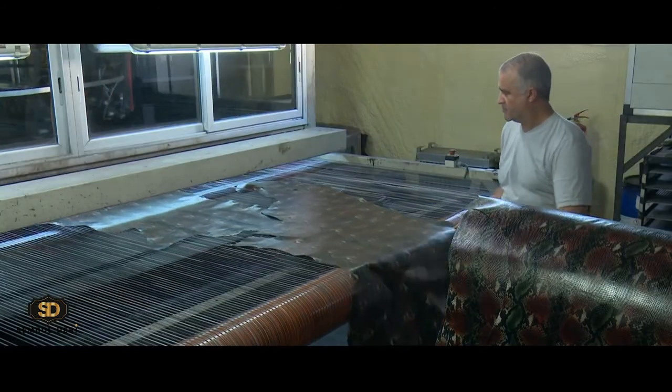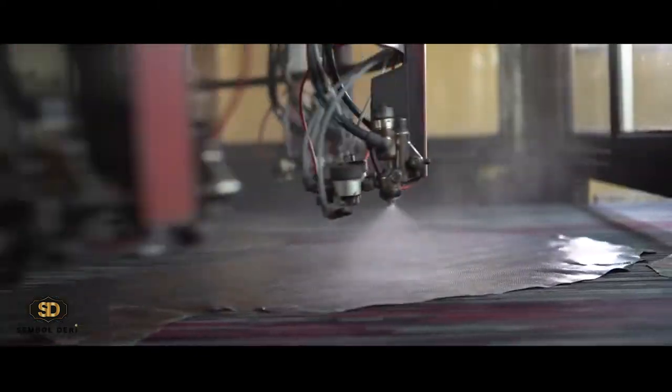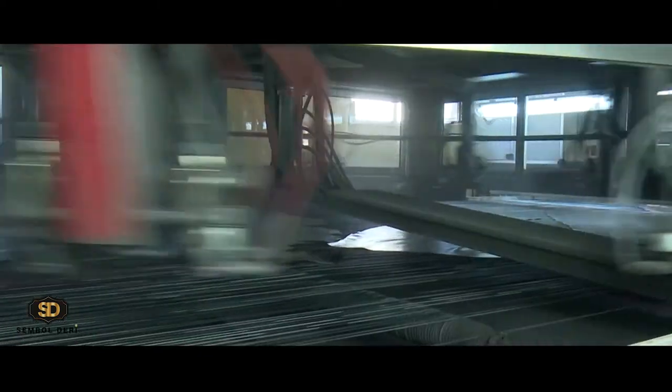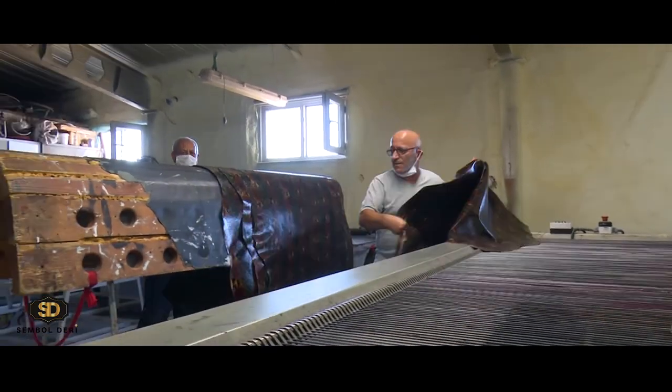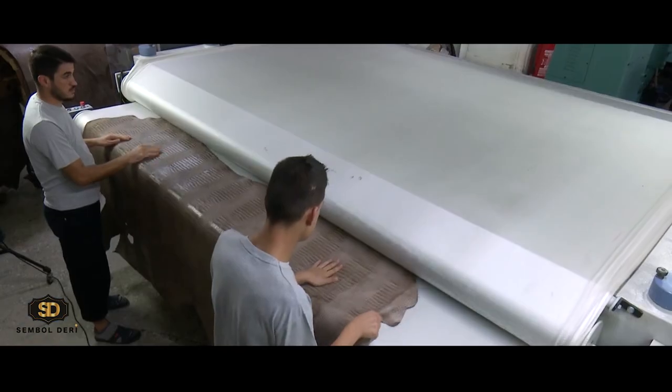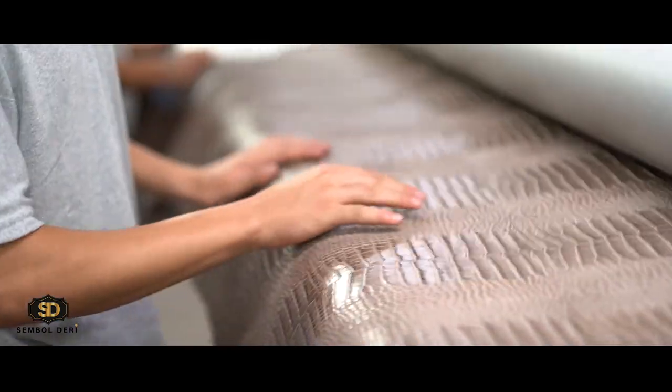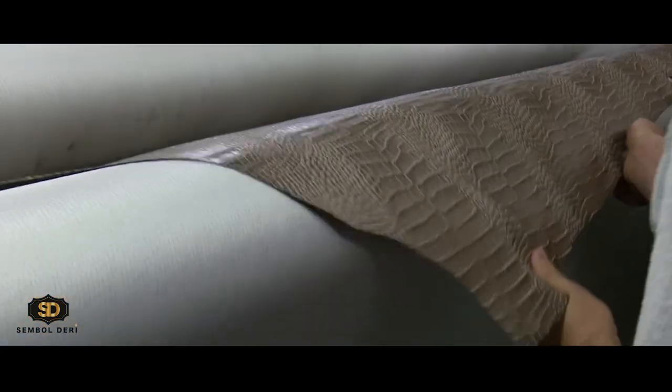At the beginning of the 2000s, Sembol Leather produced goods and services in a closed area of 1500 square meters. By the third quarter of 2020, it reached a capacity of 50 million square decimeters leather per year in an area of 3300 square meters with a renewed machinery park.